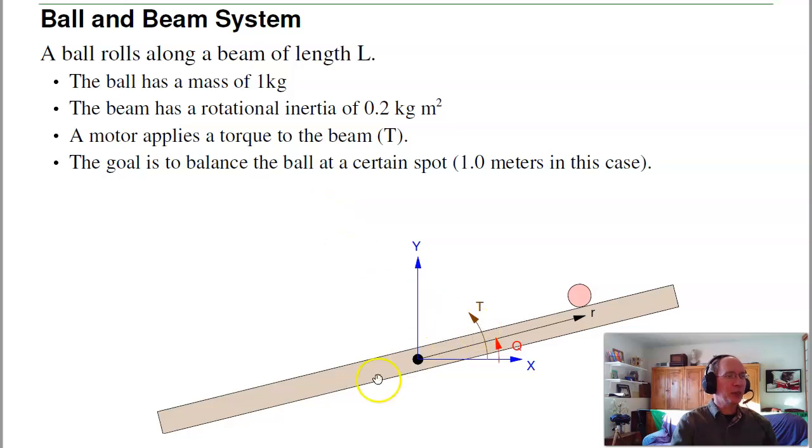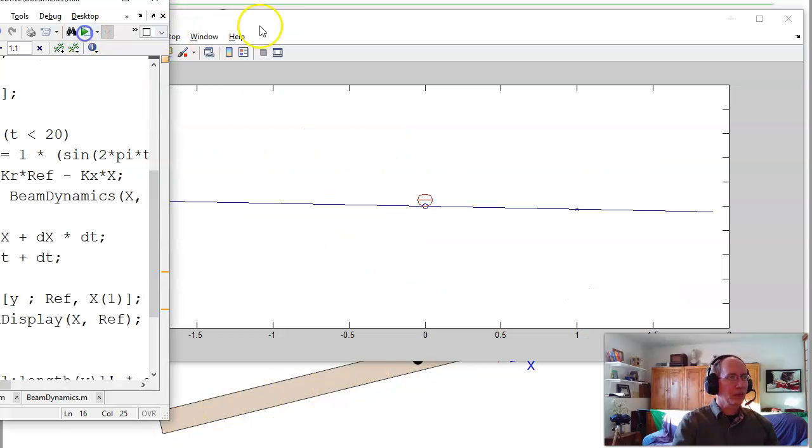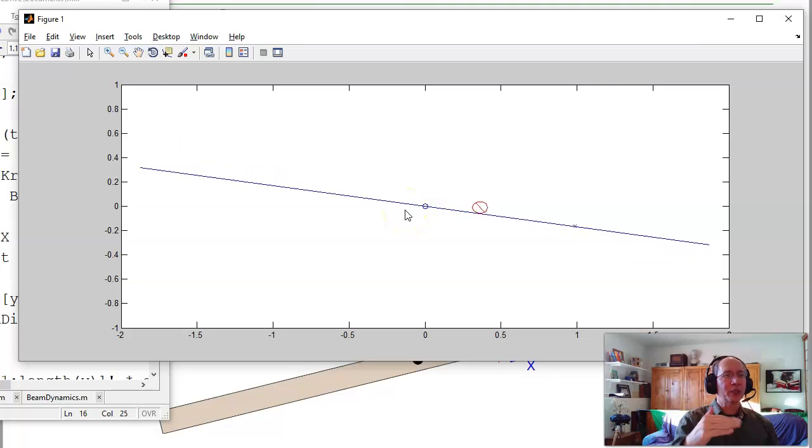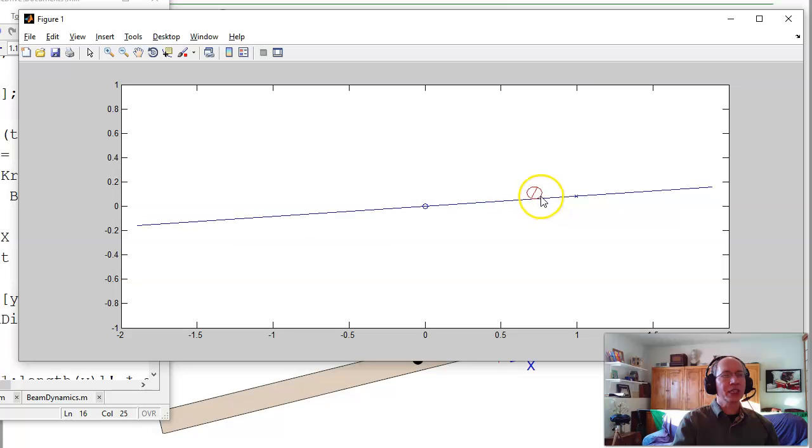To illustrate what this looks like, let's look at the resulting MATLAB simulation. The Ball and Beam System consists of a beam with a motor attached to the hub. I apply a torque that can make the beam go up and down. As the beam tilts to the right, I've got a ball on it.